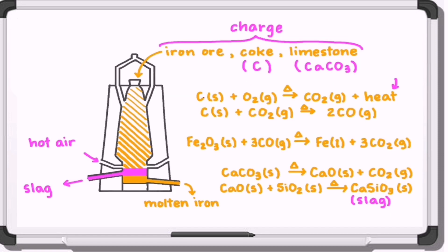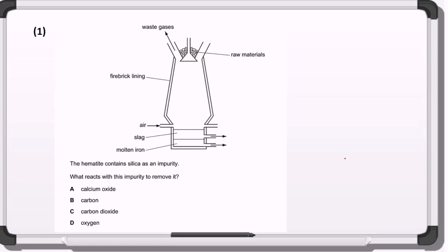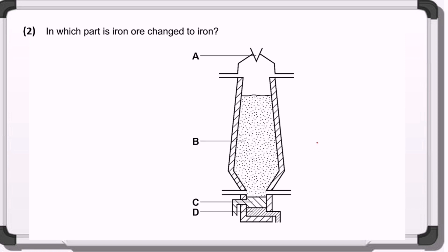To sum up, here are all the reactions studied in this video: first, carbon reacts with oxygen to produce carbon dioxide plus heat; then carbon dioxide reacts with coke to produce carbon monoxide, which is the reducing agent; then carbon monoxide reduces iron ore — hematite — to produce molten iron. Also, calcium carbonate is thermally decomposed into calcium oxide plus carbon dioxide; then calcium oxide reacts with silicon dioxide — sand — to produce calcium silicate, or slag. If you want to make sure you understand the reactions, try solving the two simple questions below the video and type your answers in the comments. Hopefully it was helpful — thank you so much, bye.